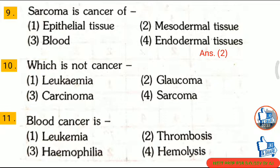Question 10: Which is not a cancer? First, leukemia; second, glaucoma; third, carcinoma; fourth, sarcoma. The correct answer is option 2: glaucoma. Leukemia, carcinoma, and sarcoma are cancers. Question 11: Blood cancer is — first, leukemia; second, thrombosis; third, hemophilia; fourth, hemolysis. The correct answer is option 1: leukemia.